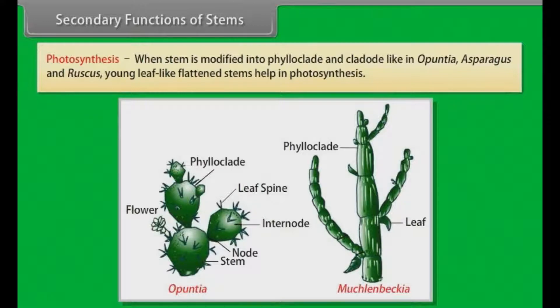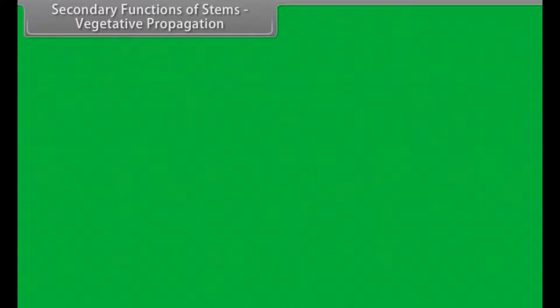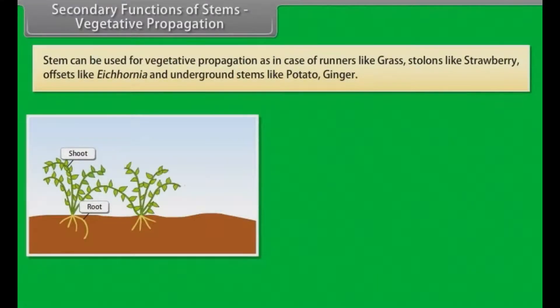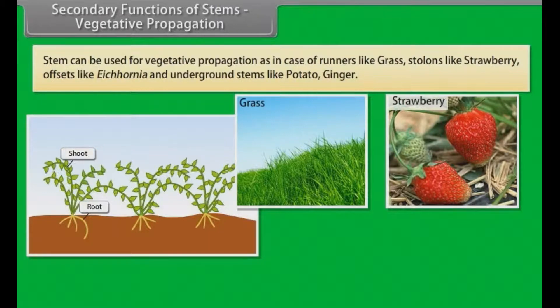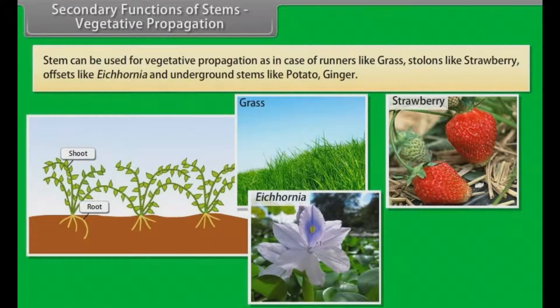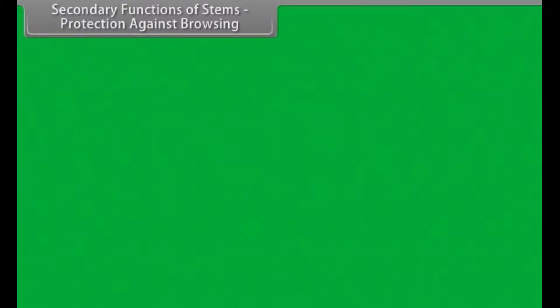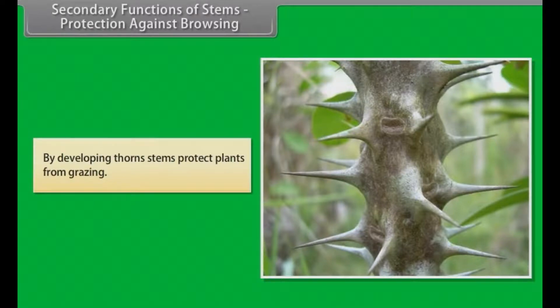When stem is modified into phyloclade and cladode, as in Opuntia, Asparagus, and Ruscus, young leaf-like flattened stems help in photosynthesis. Stem can also be used for vegetative propagation, as in runners like grass, stolons like strawberry, offsets like Eichornia, and underground stems like potato and ginger. By developing thorns, stems protect plants from grazing.